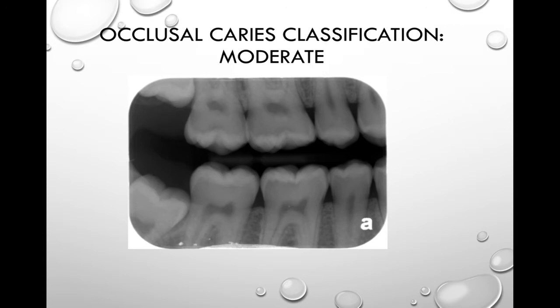Occlusal caries can be classified as incipient, moderate, or severe. Incipient occlusal caries cannot be detected with a dental radiograph. With moderate occlusal caries, the lesion extends into the dentin and appears as a thin radiolucent line between the enamel and the dentin. Looking at this radiograph, on tooth numbers two and three I can see a radiolucent band just under the enamel, and again on tooth number 30 — that is how moderate occlusal caries appears radiographically.